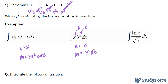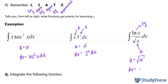And lastly, here we have a logarithmic function, and here we have an algebraic term. So therefore, your u will be x square rooted, or x to the power of 1 over 2, and your dv will be ln x dx.